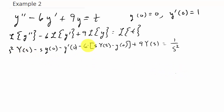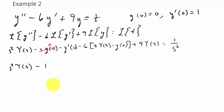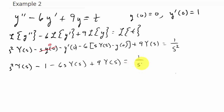Let's multiply this all out and put in our conditions. So I get s² Y(s) minus s·y(0) — well, y(0) is zero, so that term goes to zero — and then minus y'(0), so minus one. Now distributing the six: minus 6s·Y(s), then plus six times y(0), which is zero, and then plus 9·Y(s), equals 1 over s².